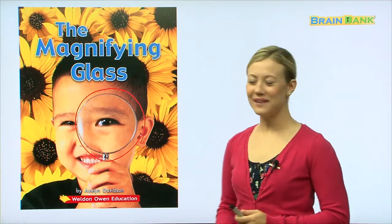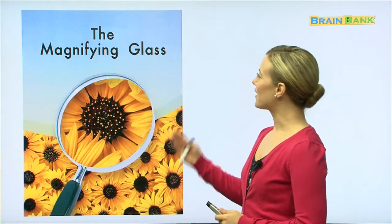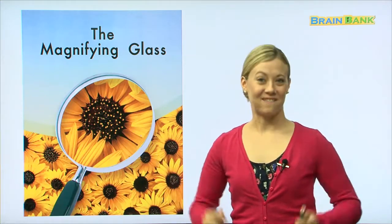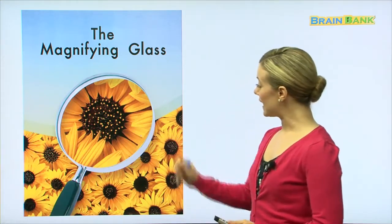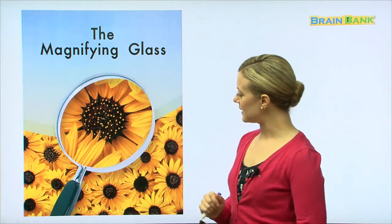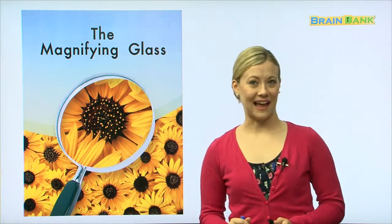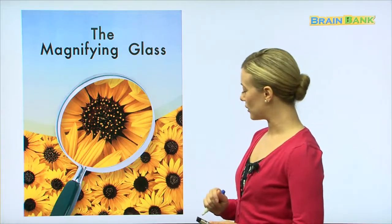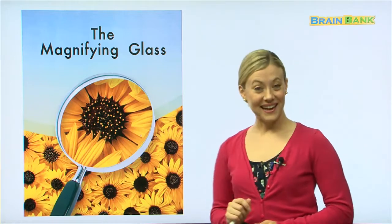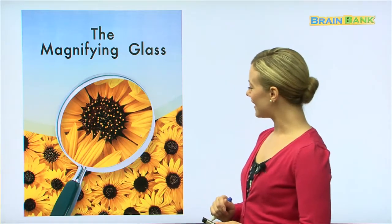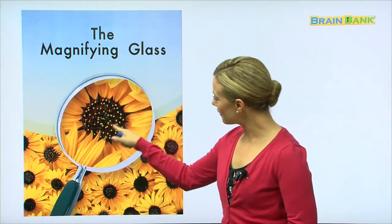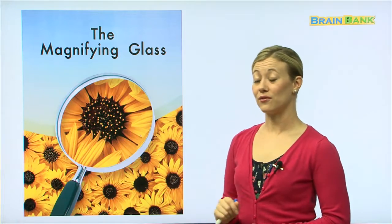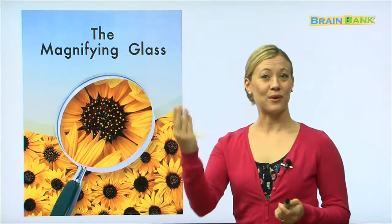So let's read the story, shall we? The magnifying glass. Let's say it all together. The magnifying glass. Very good. And here, what do we see in the magnifying glass? Yes, it's a flower. What kind of flower? Does anyone know? Yes, it looks like a daisy. We can see all the little seeds in the middle that we usually can't see if we're just looking at it with our regular eyes.